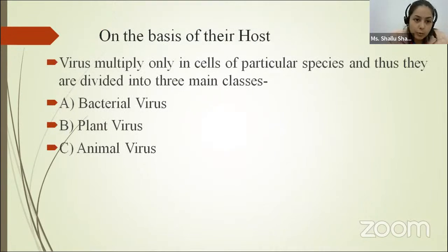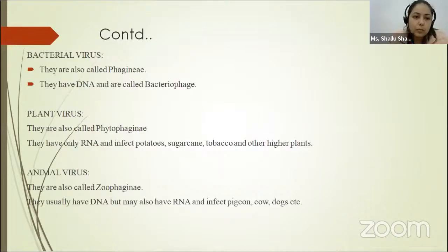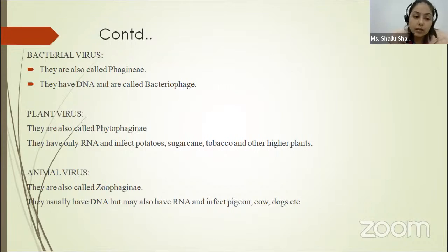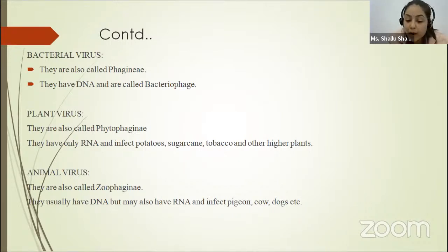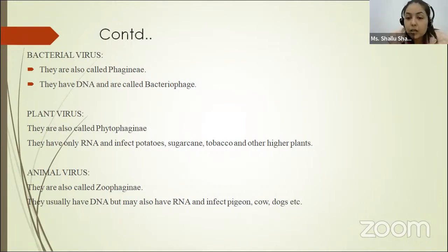On the basis of their host, viruses multiply only in cells of particular species and are divided into three main classes: bacterial virus, plant virus, and animal virus. Bacterial viruses are also called phage or bacteriophage — they have DNA, not RNA. Bacteriophages are a type of virus that infect bacteria, also called bacteria eaters, because bacteriophages destroy their host cells.